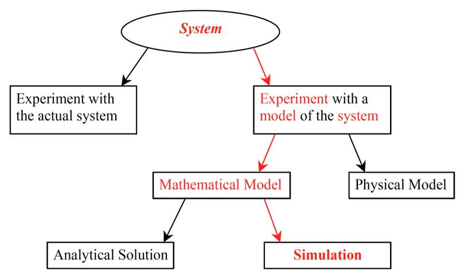Computational science is a rapidly growing multidisciplinary field that uses advanced computing capabilities to understand and solve complex problems. It is an area of science which spans many disciplines, but at its core it involves the development of models and simulations to understand natural systems.